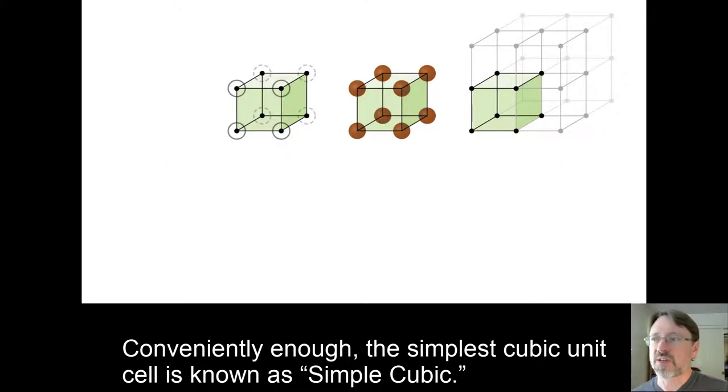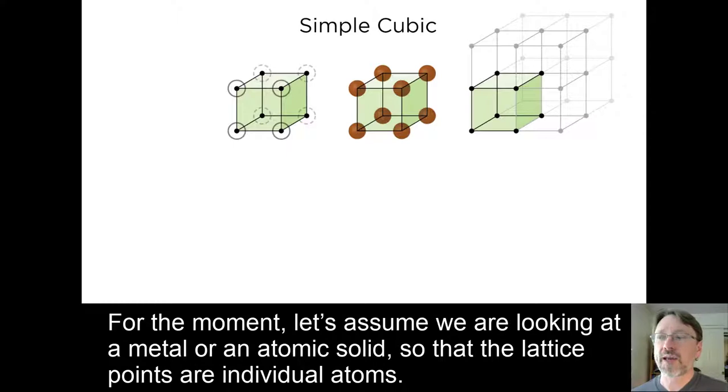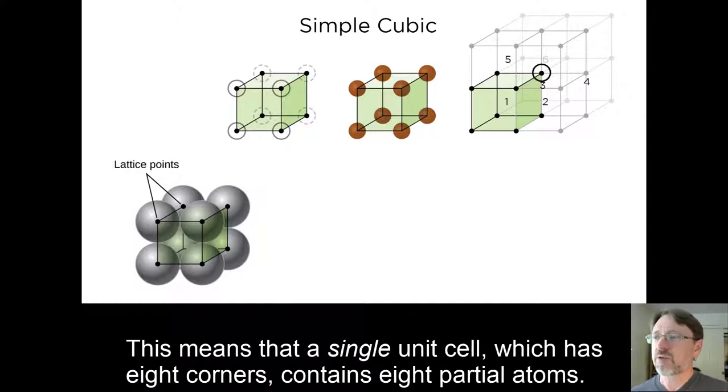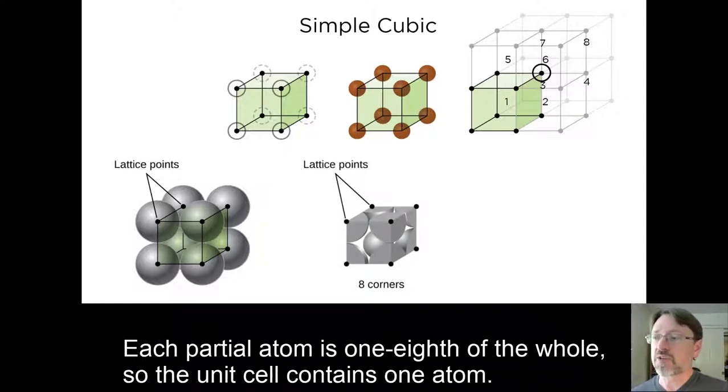Conveniently enough, the simplest cubic unit cell is known as simple cubic. For the moment, let's assume we are looking at a metal or an atomic solid, so that the lattice points are individual atoms. Notice as well that each of these atoms is at a corner of the unit cell. This means that each atom is part of eight different unit cells. That means that a single unit cell, which has eight corners, contains eight partial atoms. Each partial atom is one-eighth of the whole, so the unit cell contains one atom.